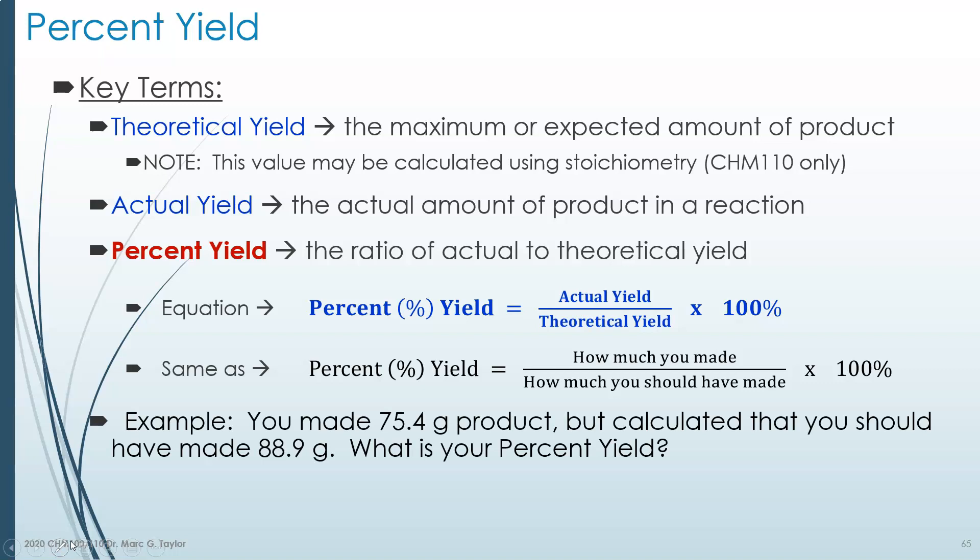For example, you made 75.4 grams of a product, but calculated - and I would calculate this for you in Chem 100 - you calculated that you should have made 88.9 grams. What's your percent yield?